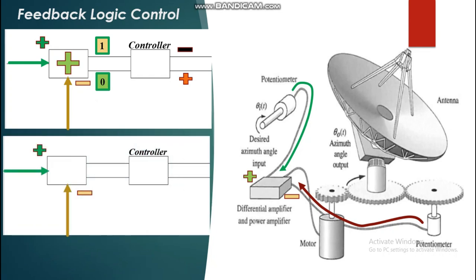In Case 2, if the error is negative, the actual output exceeds the desired output. The motor needs to reduce the actual output. Again, binary logic is sent to the controller, which determines the polarity of the motor and reverses its direction, reducing the actual output back to the desired value so that the error reaches zero.